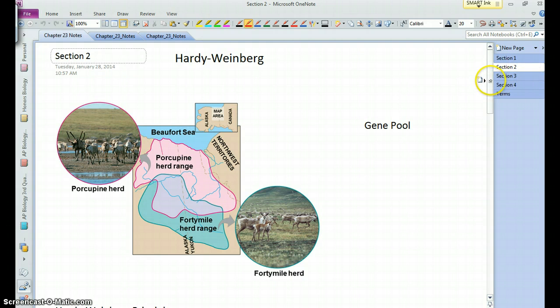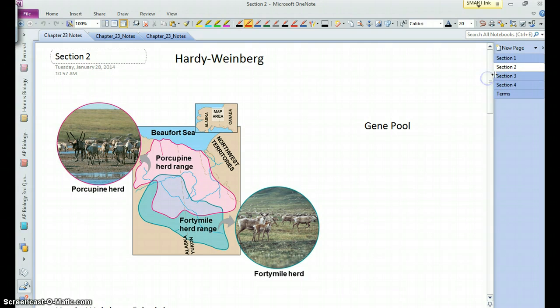Alright, so now, Hardy-Weinberg. So, Hardy-Weinberg is this, or what's sometimes known as the Hardy-Weinberg principle. This is essentially a mathematical model of a gene pool. And a gene pool is, in a population, it's essentially all the genes or alleles in that population.